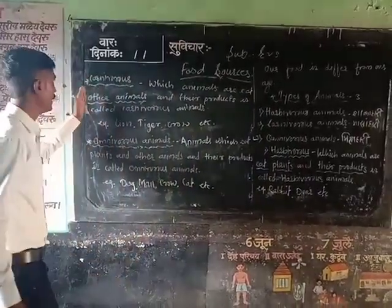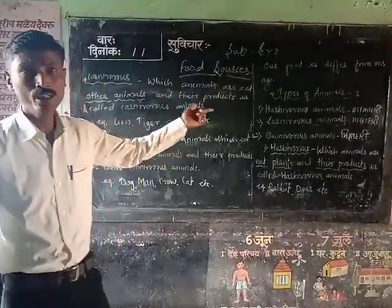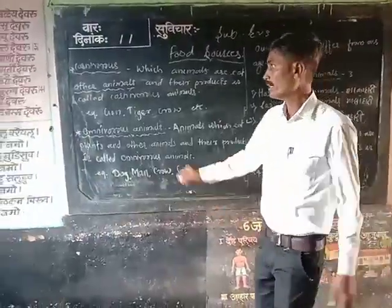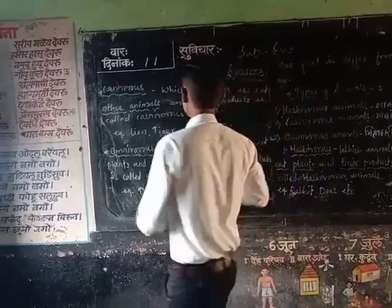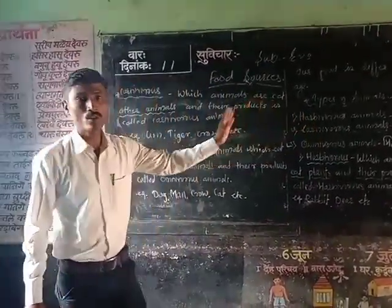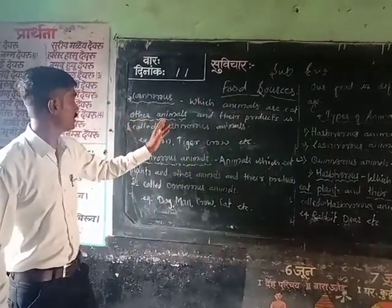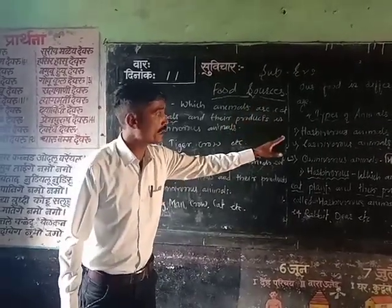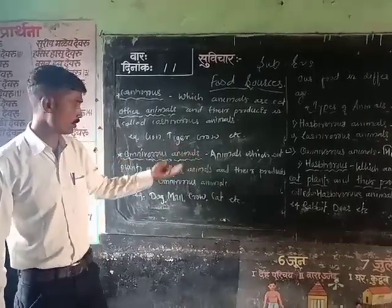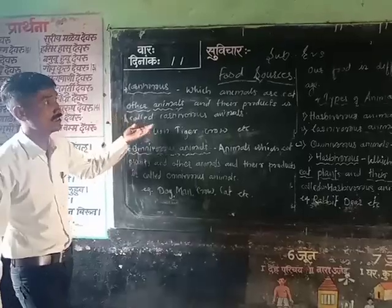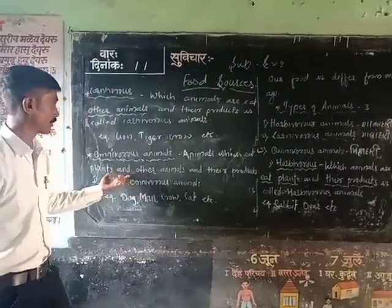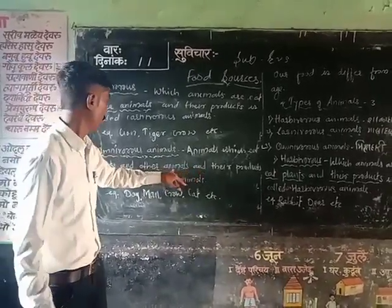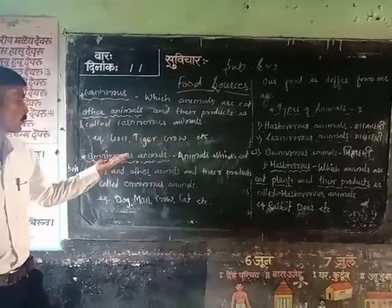So what is the difference between carnivorous and omnivorous animals? Herbivorous animals eat only plants and their products. And carnivorous animals eat only other animals and their products. This is the most important difference between carnivorous and herbivorous. And these two types of food belong to omnivorous animals. So omnivorous animals eat both plants and other animals and their products. Thank you.